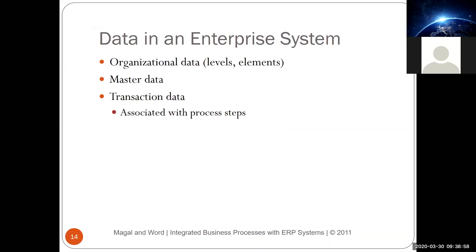Welcome back. In the next session we will start with the data in the enterprise system. In the data we have the organizational data, which describes the levels and elements in the company. There are three types of data in the ERP system: organizational data, master data, and transaction data.